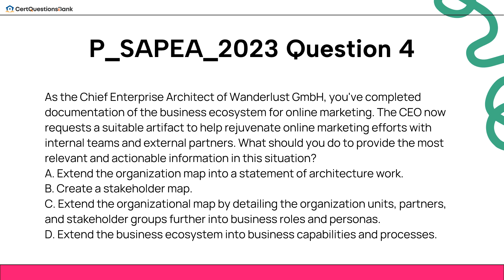As the Chief Enterprise Architect of Wanderlust GmbH, you've completed documentation of the business ecosystem for online marketing. The CEO now requests a suitable artifact to help rejuvenate online marketing efforts with internal teams and external partners. What should you do? A. Extend the organization map into a statement of architecture work. B. Create a stakeholder map. C. Extend the organizational map by detailing the organization units, partners, and stakeholder groups further into business roles and personas. D. Extend the business ecosystem into business capabilities and processes.